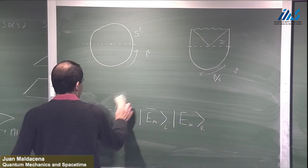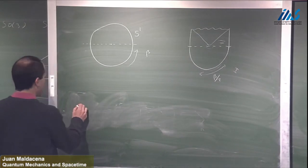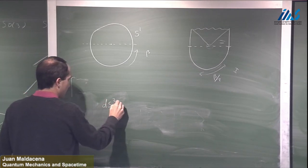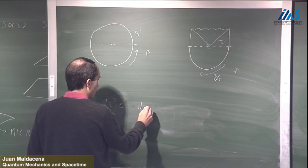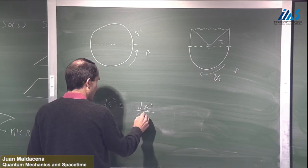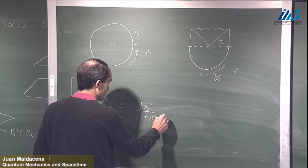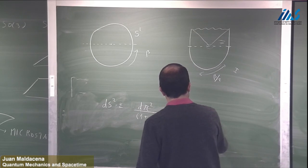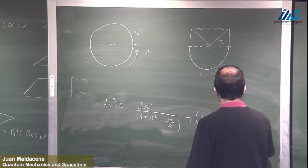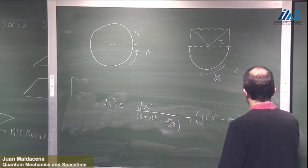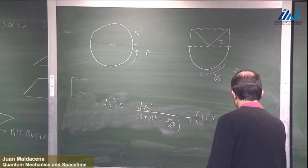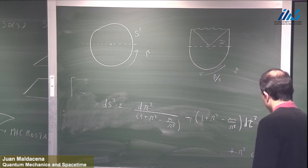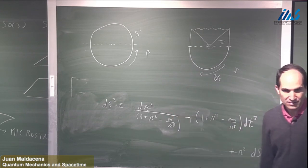Let me write the formula for the AdS black hole. The metric has the form: some function of r — roughly r squared minus mass over r to some power — times d tau squared, plus the inverse times dr squared, plus r squared d Omega squared for the sphere directions. When M is zero we get standard AdS space where r equals 0 is perfectly smooth, and for a massive black hole we get the Schwarzschild-AdS metric.